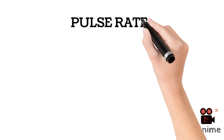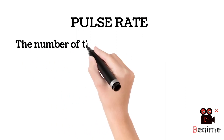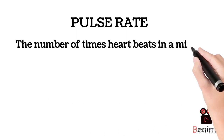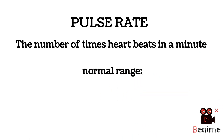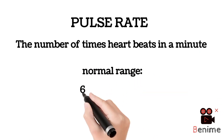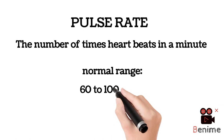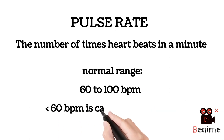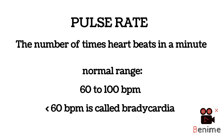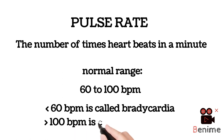Now moving towards the second vital sign, which is pulse rate. What exactly is pulse rate? It is the number of times our heart beats in a minute. The normal heart rate or pulse rate is 60 to 100 beats per minute. If the heart beats less than 60 beats per minute, then it is called bradycardia.